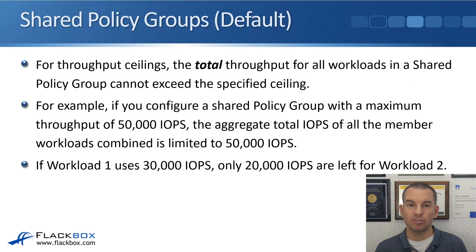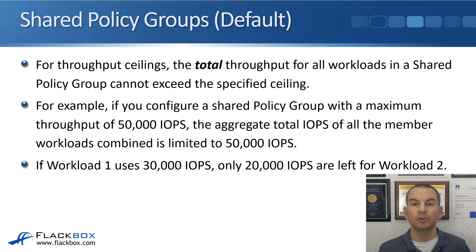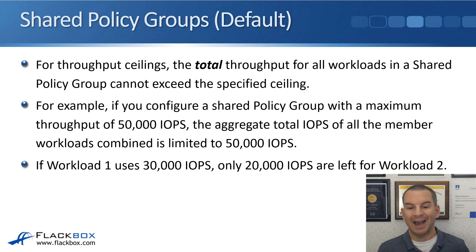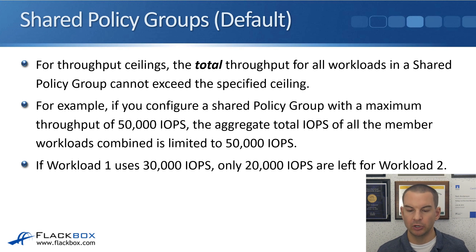With shared policy groups, for throughput ceilings, the total throughput for all workloads in the group cannot exceed the specified ceiling. For example, with a shared policy group set to 50,000 IOPS, the aggregate total IOPS of all member workloads is limited to that 50,000 IOPS. So if workload 1 uses 30,000 IOPS, only 20,000 IOPS are left for workload 2 — they share it rather than each getting the full amount.